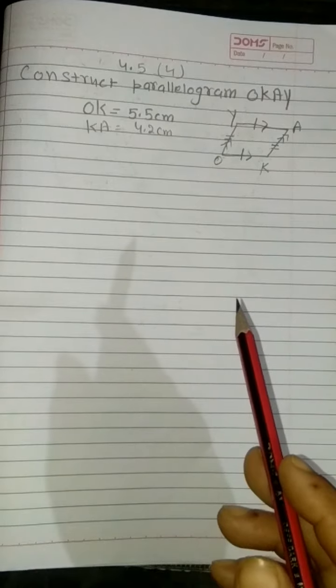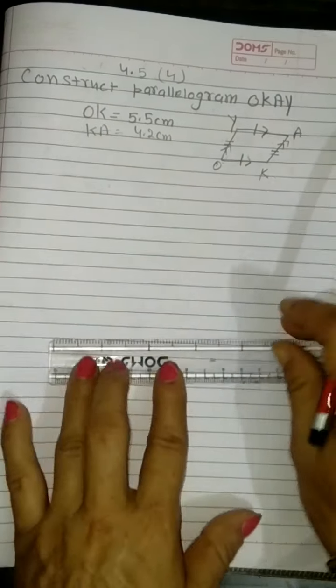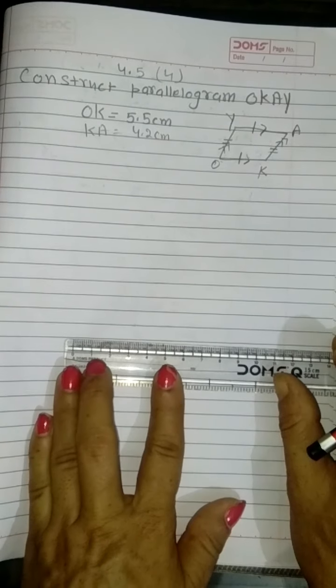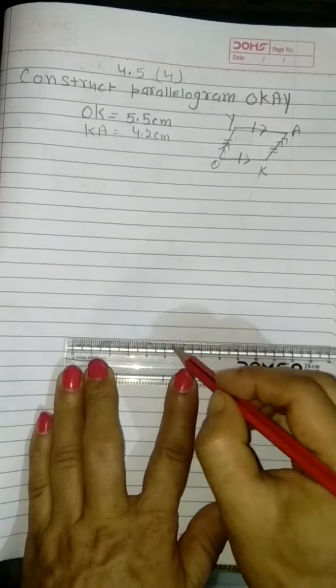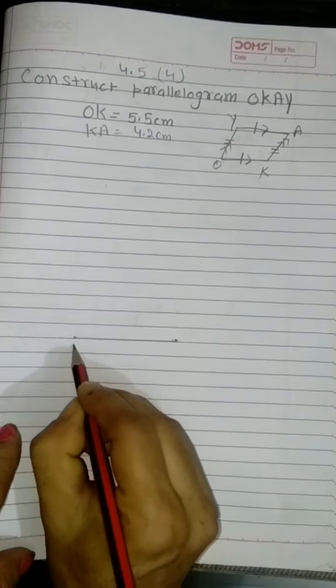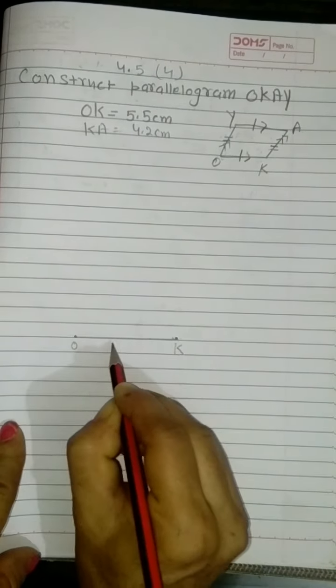OK is 5.5 cm. So first of all I will draw a line segment of 5.5 cm. Name it OK.